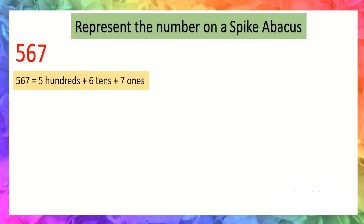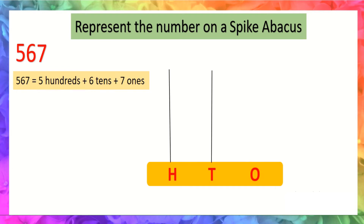Now represent the number on a spike abacus. The number is 567. First step is to draw a spike abacus. As you can see, the number consists of three digits, so we need to draw three spikes: one, two, three. Then represent the place value: ones, tens, and hundreds. At ones place, the digit is seven, so we will draw seven beads.